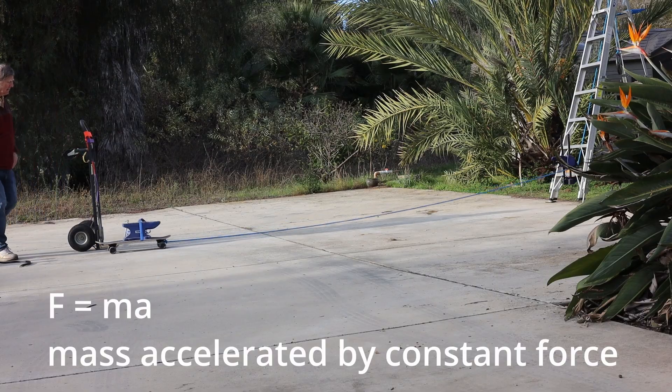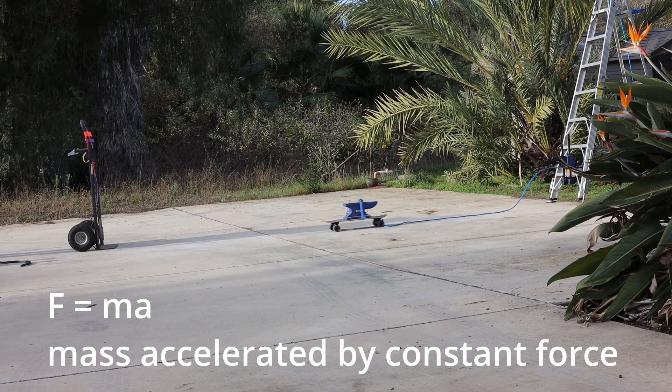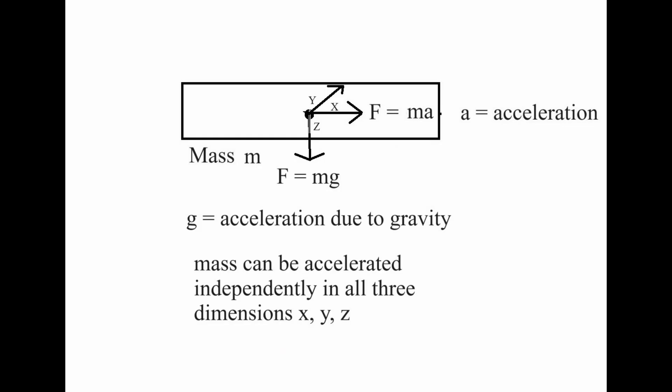Mass constant m describes the relationship between force and acceleration. You can have independent accelerations in all three axes. Mass always has the acceleration due to gravity pulling it straight down to the center of the earth. It can simultaneously have acceleration on a level surface at right angles to the straight down direction.